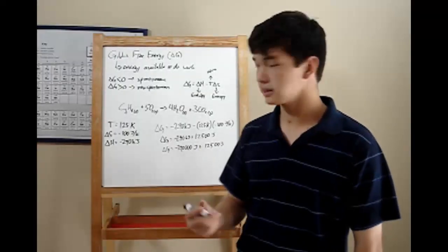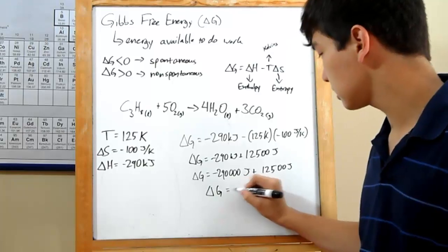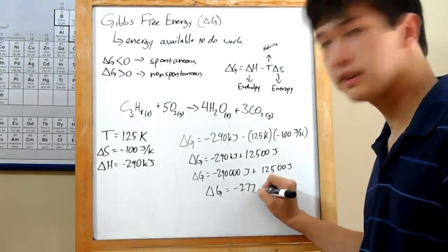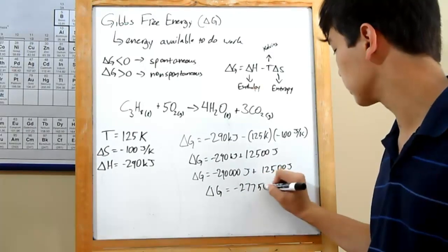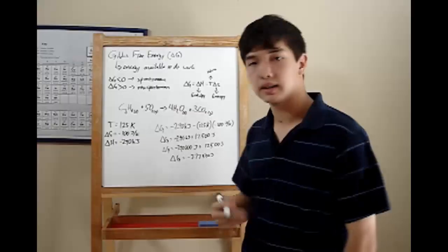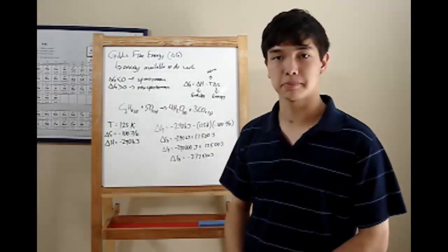That's pretty simple. Now you just need to add them together. You get delta G equals negative 277,500 joules. And knowing that it's negative, it's less than zero, so your reaction is spontaneous.